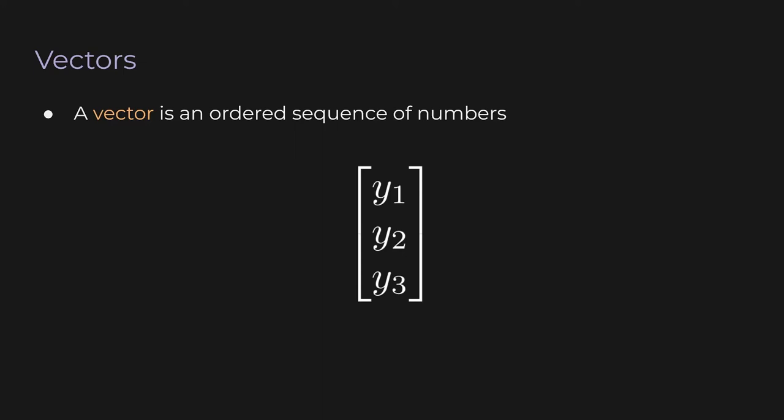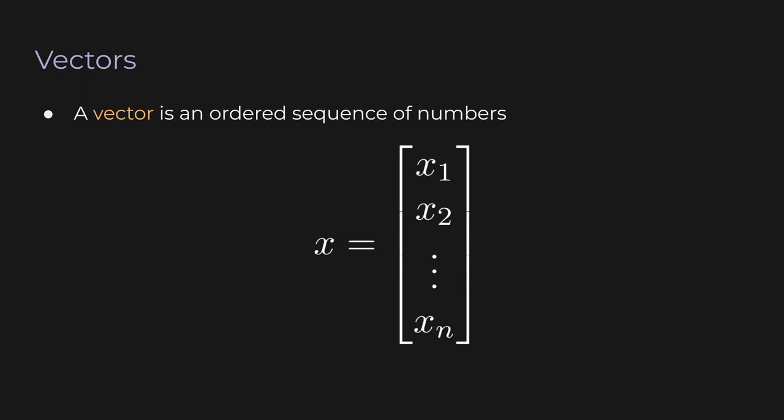For example, I have the first entry as y1, and then there's y2, and so on. Typically, we write all the variables in a vector with the same letter, and we just change the subscript. Taking things further, we can actually express the entire vector as just a single variable. Here we have the vector x, and the entries are x1, x2, and so on, all the way to xn.